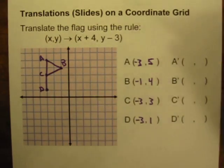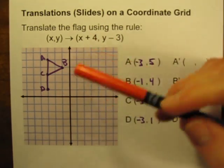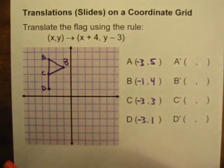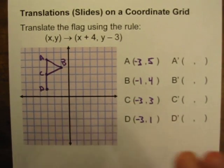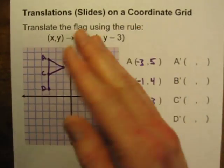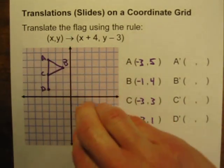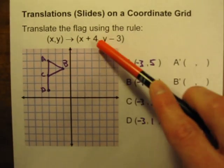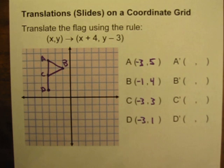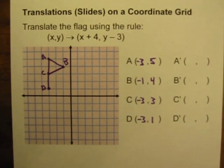Translations, depending on which book you're using, will also be referred to as slides or even glides, but I will be using the word translation here. We're going to be moving this flag in a translation — we're not going to pick it up and flip it over, we're not going to be rotating it. We're simply going to slide it in some direction across the graph, using this rule to determine where the original purple flag will move.